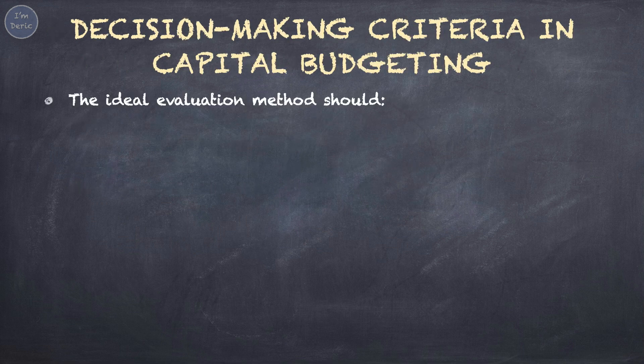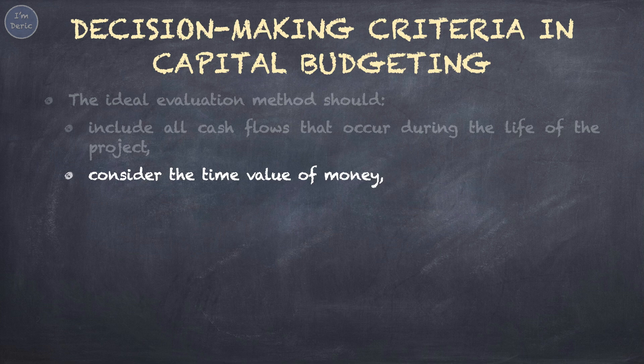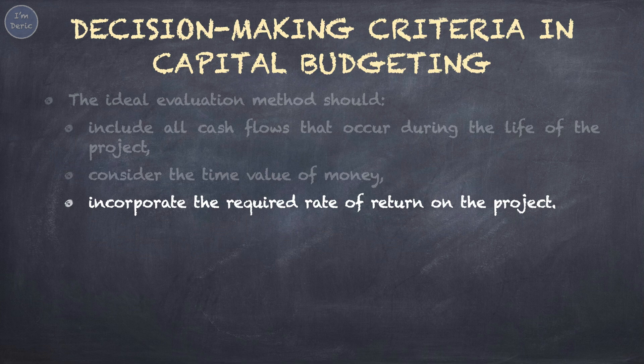Regarding the decision-making criteria in capital budgeting, the ideal evaluation method should: first, include all cash flows that occurred during the life of the project — take note, all cash flows; second, consider the time value of money, which means the timing of cash flows; and third, incorporate the required rate of return on the project. The required rate of return is the minimum return that companies should earn — we will not accept any project that has a return lower than the required return.